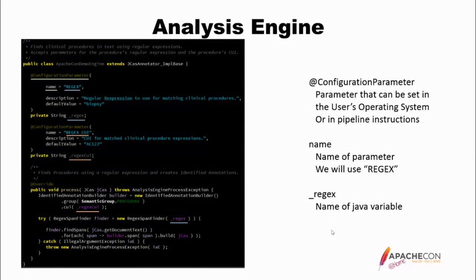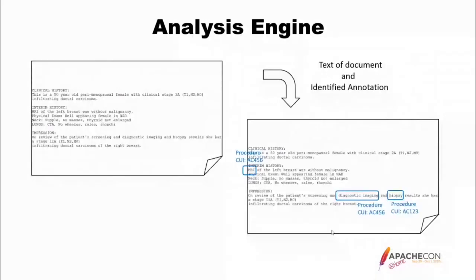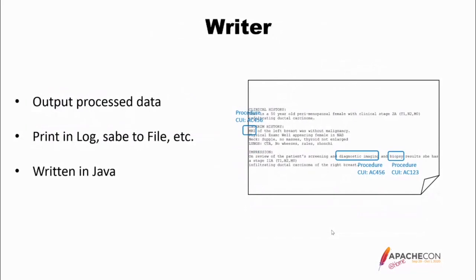So now, on the left we have a clinical document, and on the right we're going to look for 'diagnostic imaging' and 'MRI' and assign those the CUI AC456. We're also going to keep looking for 'biopsy.' A writer can output the processed data — you can print it into a log, save it to file, put it in a database, etc. Basically anything you have access to. Anything from which you can read or write data, you can write one of these collection readers or writers to use it.